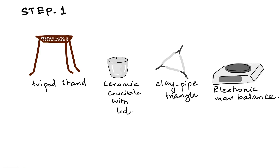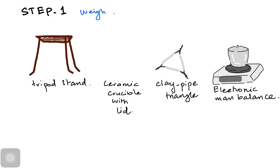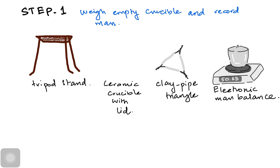In step 1, we put the empty crucible along with the lid on the mass balance to measure its mass. We weigh the empty crucible and record its mass. For example, the mass of the empty crucible turned out to be 50.63 grams.